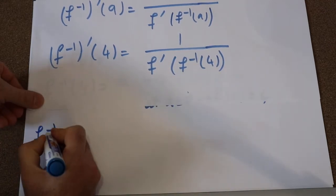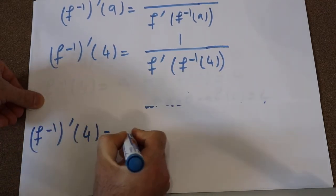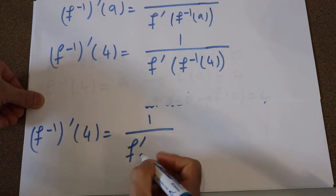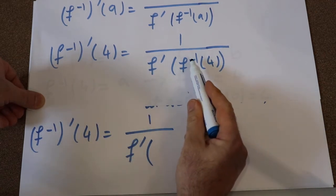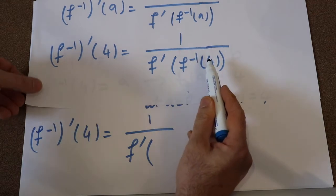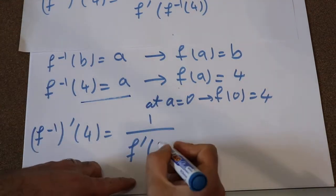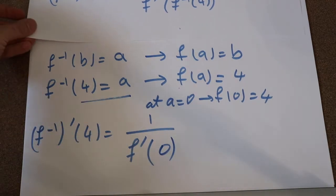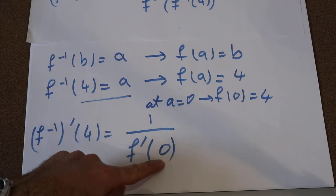Therefore, f⁻¹ prime(4) will be equal to 1 divided by the derivative of this function at f⁻¹(4). And f⁻¹(4) you just calculated is equal to 0. So all you need to do is calculate the derivative of the original function at point 0.